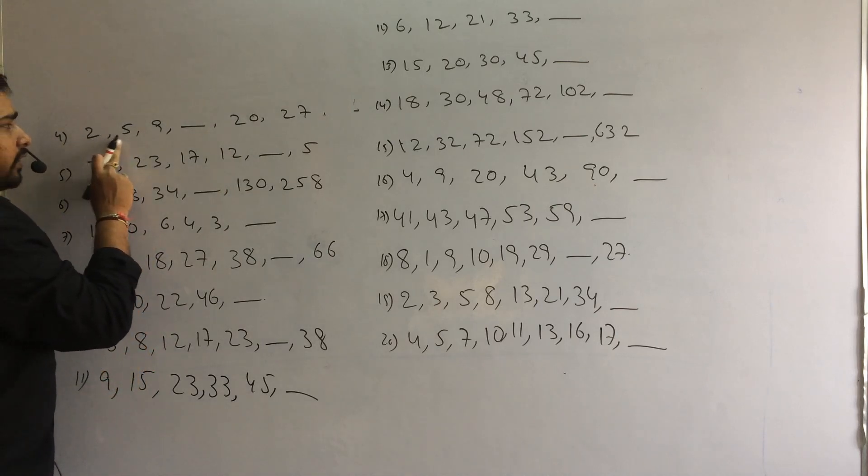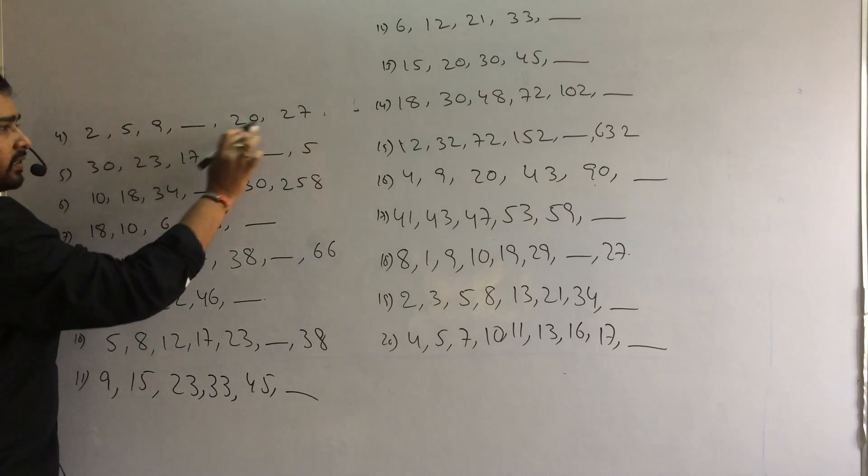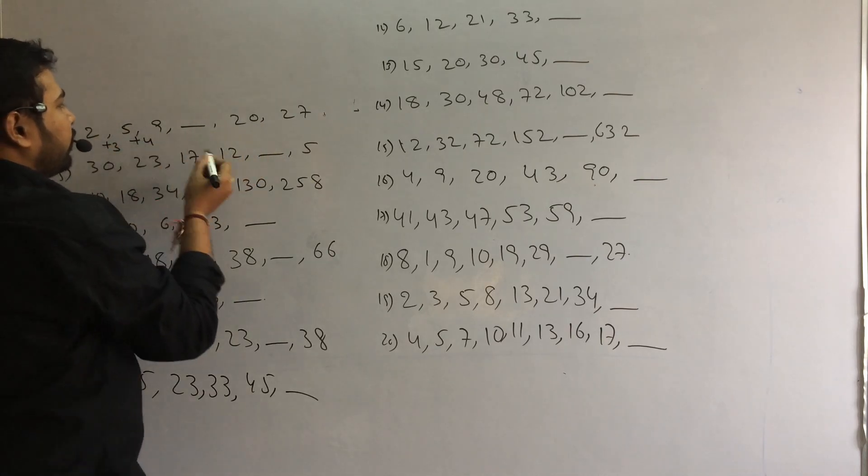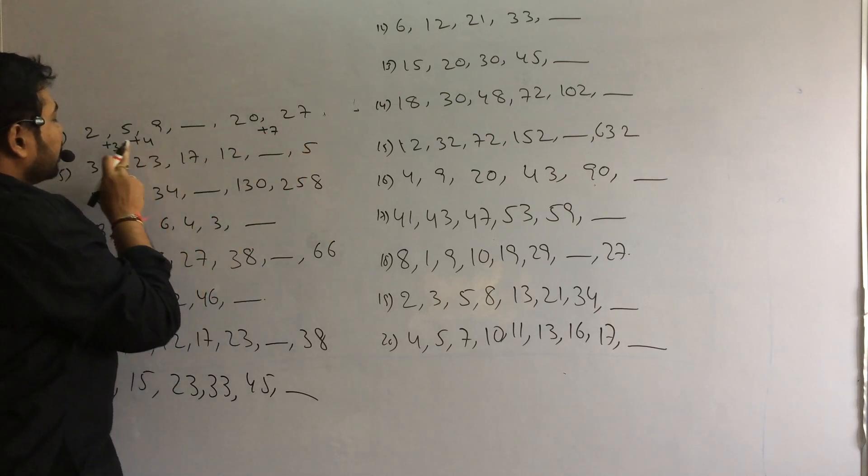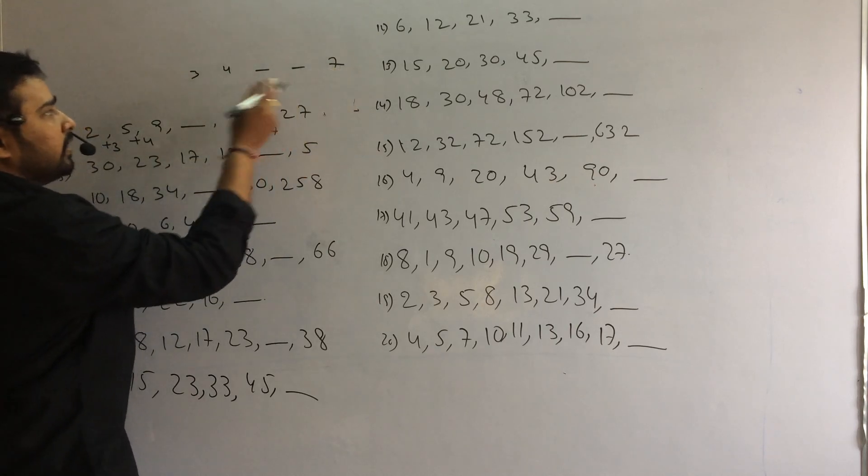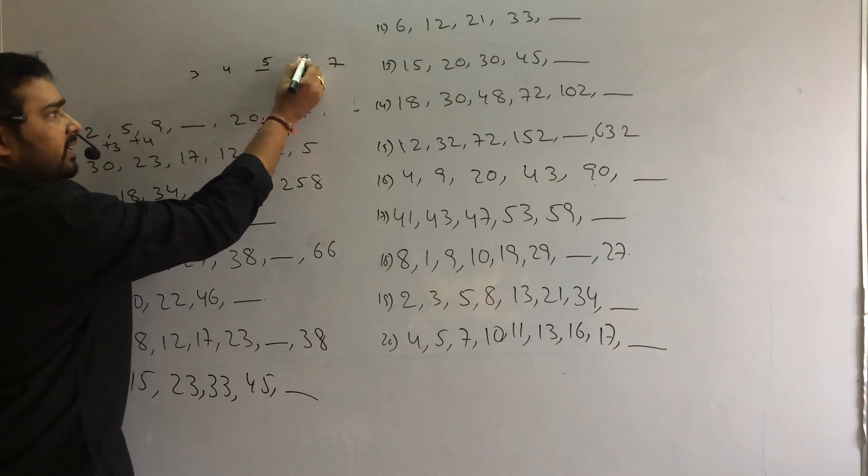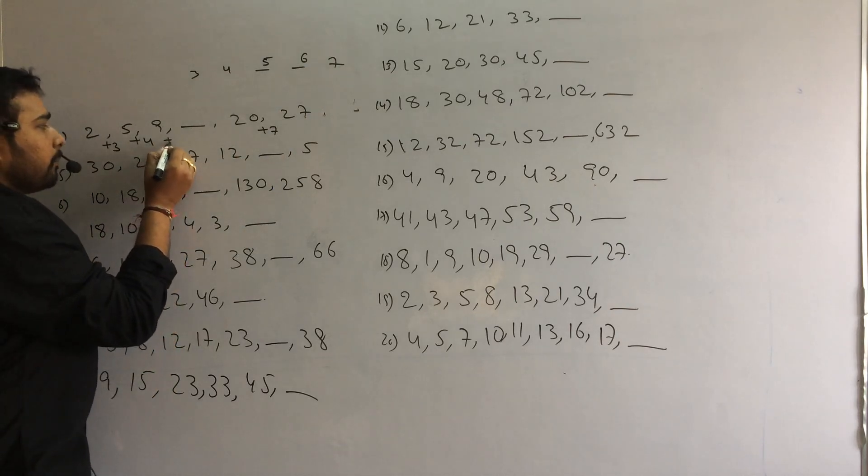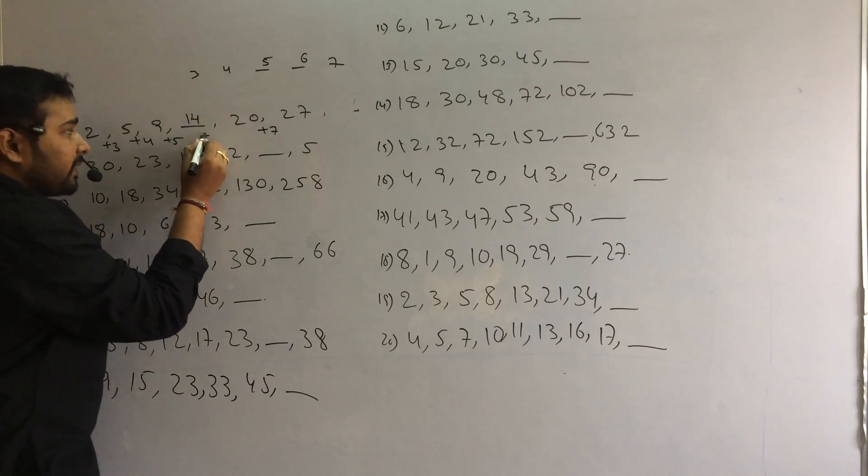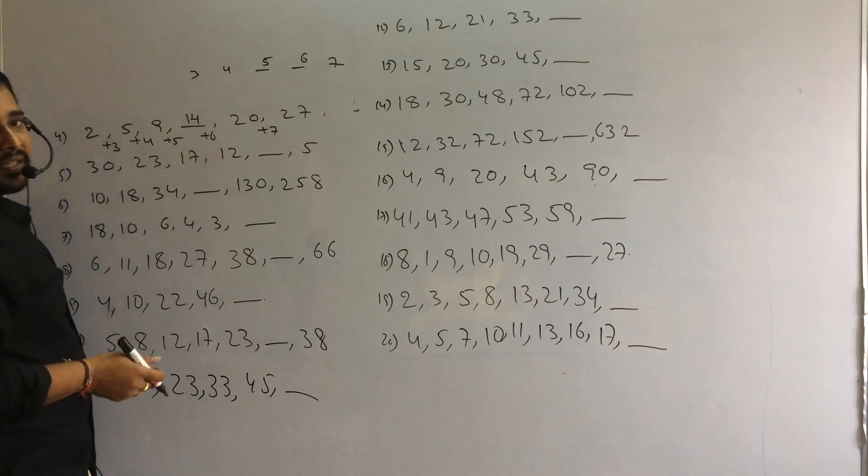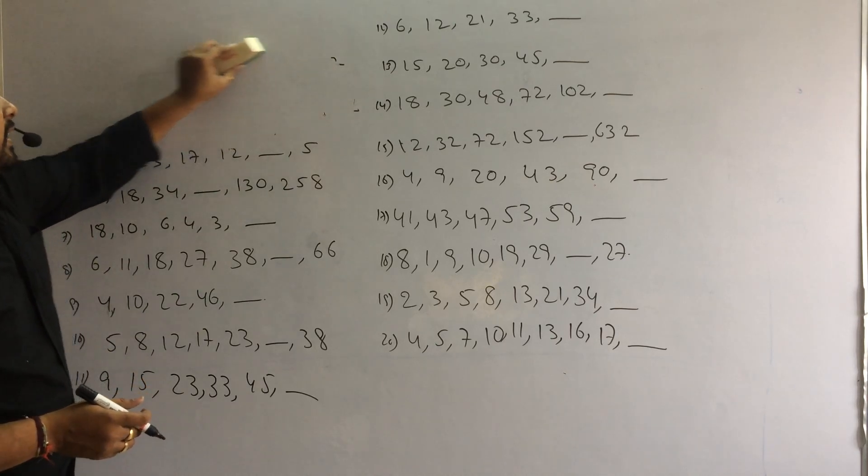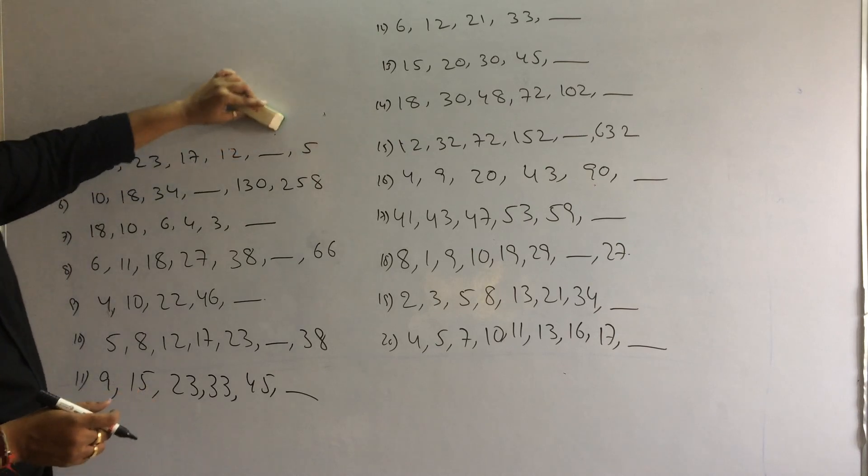Next. Here the difference is very normal. By observing these numbers, difference is very normal. Here difference is 3, 4, 7. 3, 4, 5, 6, 7. And here the difference is plus 5. 9 plus 5, 14. 14 plus 6, 20. So my answer is 14. Logically, natural numbers in increasing order. That's our answer.